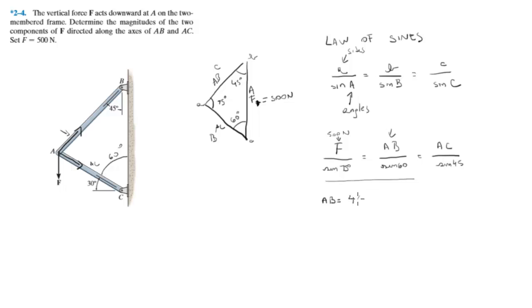Then you do the same for this one. You multiply 500 by sine of 45 and you divide by sine of 75, and you get that AC is equal to 366.01 newtons. Final answer.